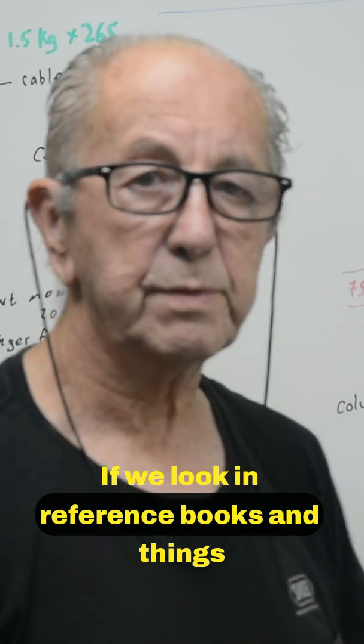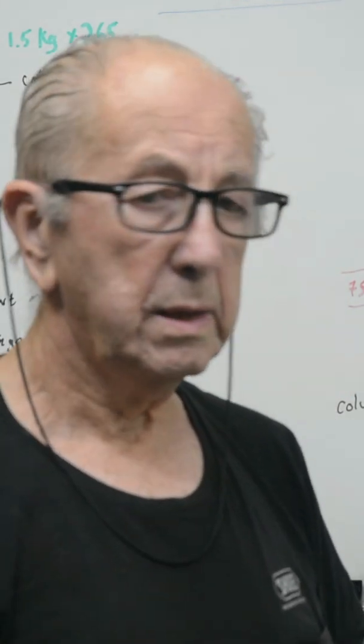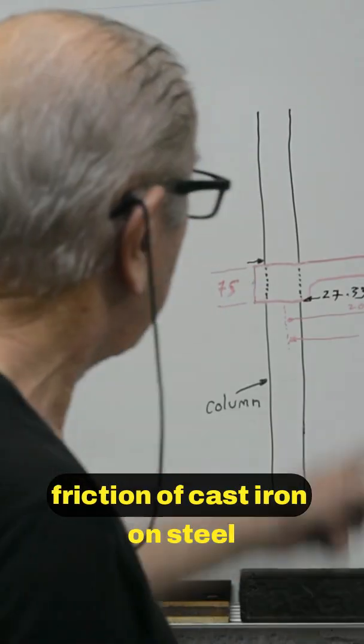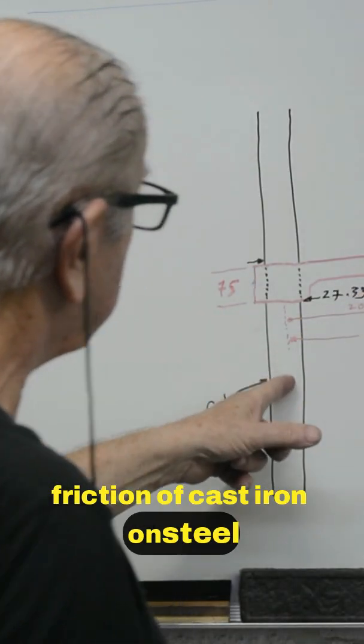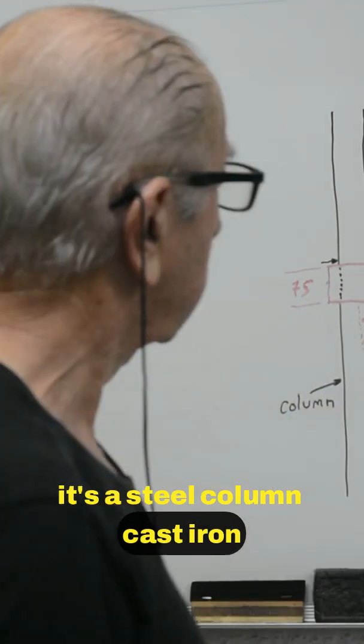If we look in reference books and similar sources, it averages out the coefficient of friction of cast iron on steel. It's a steel column, cast iron table.